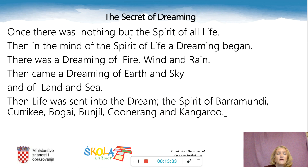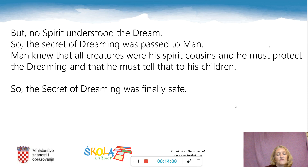The Secret of Dreaming: Once there was nothing but the spirit of all life. Then, in the mind of the spirit of life, a dreaming began. There was a dreaming of fire, wind and rain. Then came a dreaming of earth and sky, and of land and sea. Then life was sent into the dream. But no spirit understood the dream, so the secret of dreaming was passed to Man. Man knew that all creatures were his spirit cousins, and he must protect the dreaming and tell that to his children. So the secret of dreaming was finally saved.